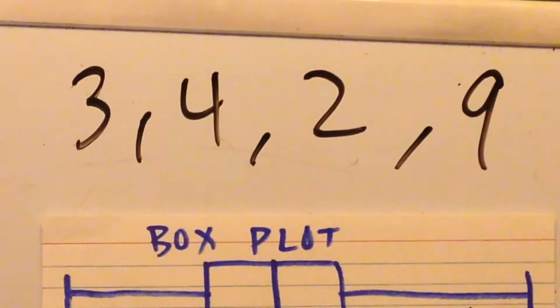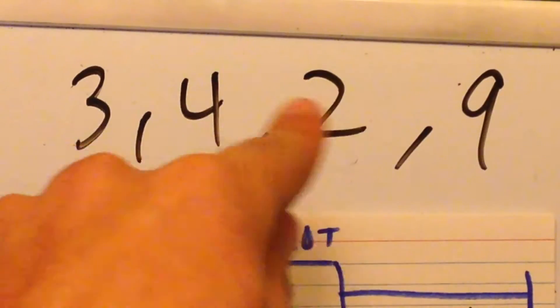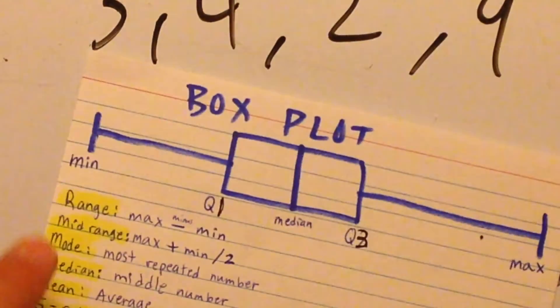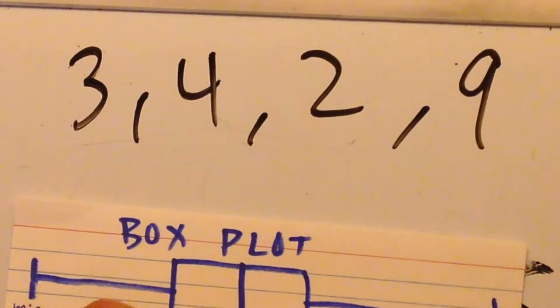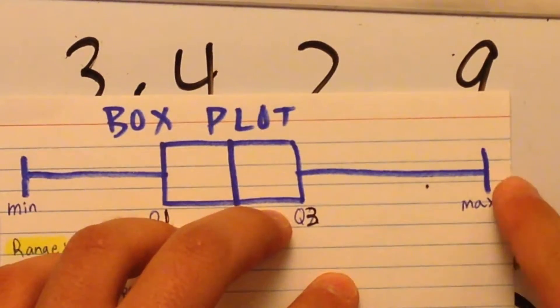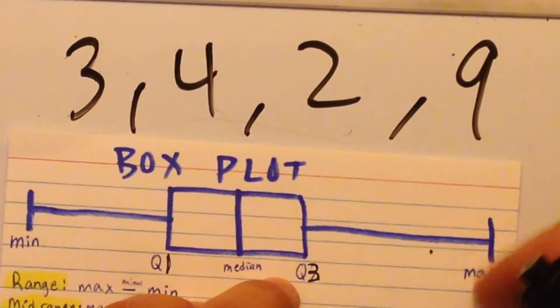That's our set of numbers. And then we're just going to place, what's the minimum? 2. 2 goes here, right there. And then the maximum, here, the maximum is 9, so it goes all the way here.